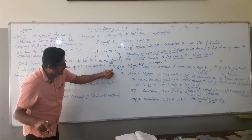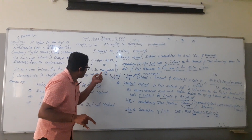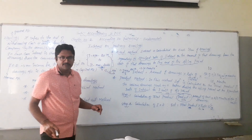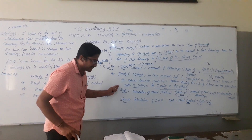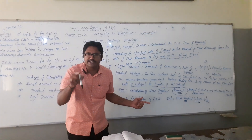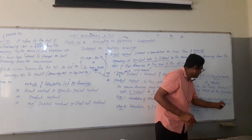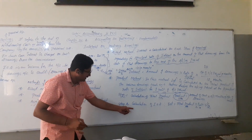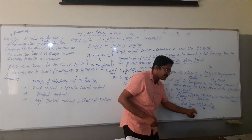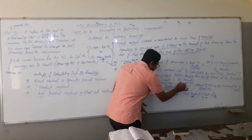Outstanding period is from the date of drawing up to the end of the accounting period — the total months constitute outstanding months. To summarize the product method: Step 1 — calculate total product = Amount of each drawing × Outstanding months or number of units. Step 2 — calculate interest on drawings = Total product × Rate of interest × 1/12.